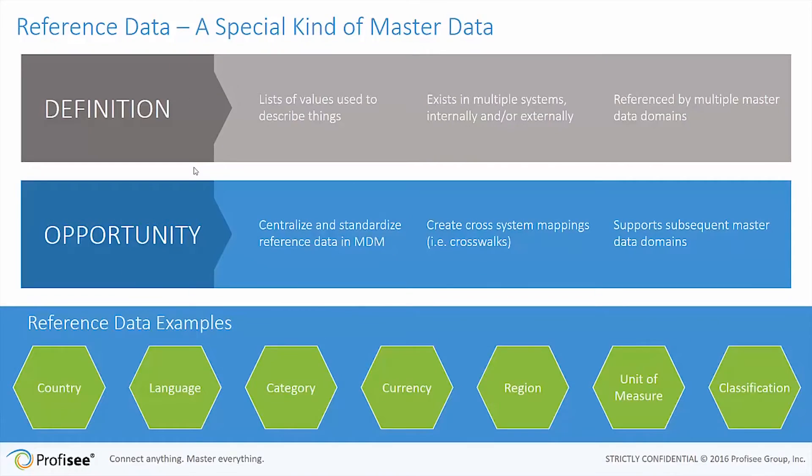The simple example is the list of languages. Your CRM and ERP applications both might have their own list of languages that obviously have overlap. They probably both have the definition for English as a language, but they might use different keys to define those languages, different descriptions. So this reference data typically is simple lists that exist in multiple places and are referenced by multiple domains.